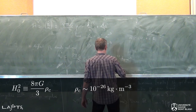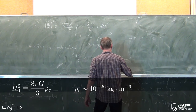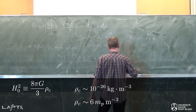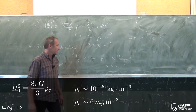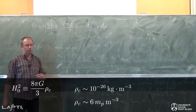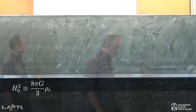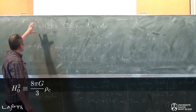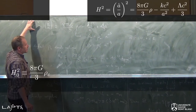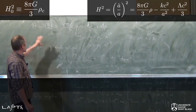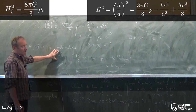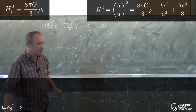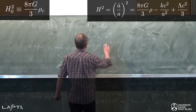Si on prend les valeurs mesurées pour H₀ et la constante de la gravitation de Newton, on trouve ρ_C. En termes de kg par mètre cube, ça fait quelque chose de l'ordre de 10⁻²⁶ kg par mètre cube. Ça représente à peu près 6 masses du proton par mètre cube, c'est-à-dire cette densité critique correspond à 6 protons par mètre cube.